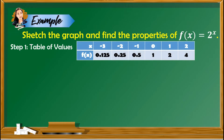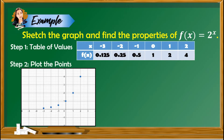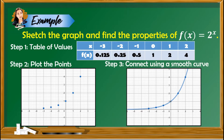After having the table of values, we can now proceed to the plotting of points on the Cartesian coordinate plane. For step 3, all we need to do is connect all the points using a smooth curve to have the graph of the function. As you can see on this graph, the graph is increasing, because the value of a, which is 2, is greater than 1.